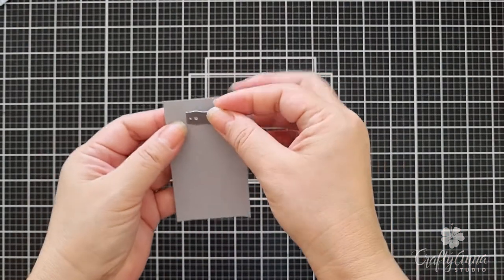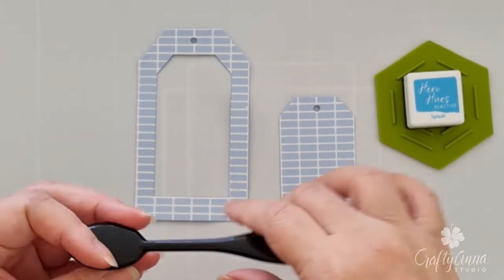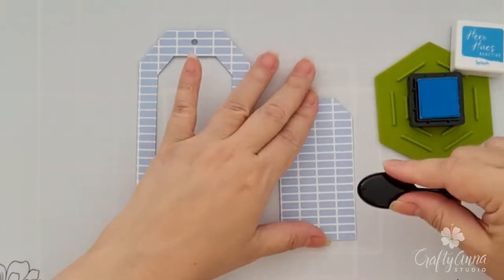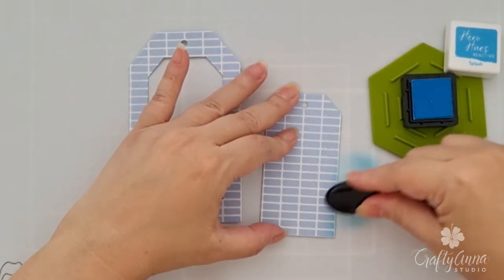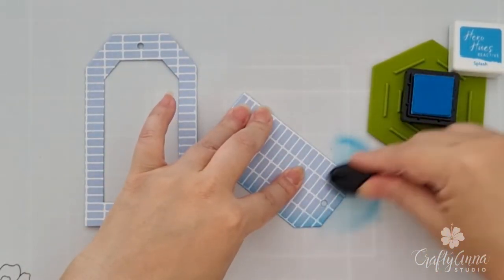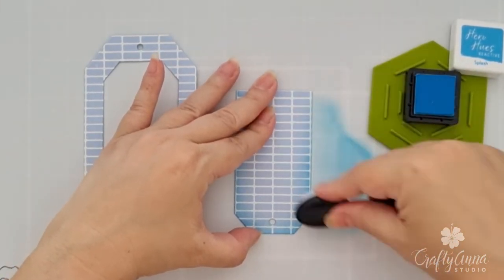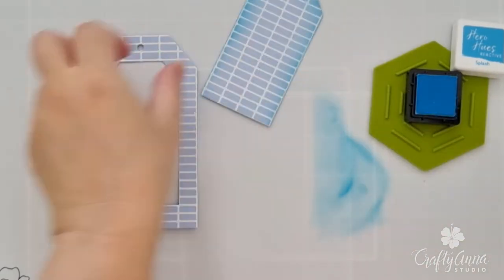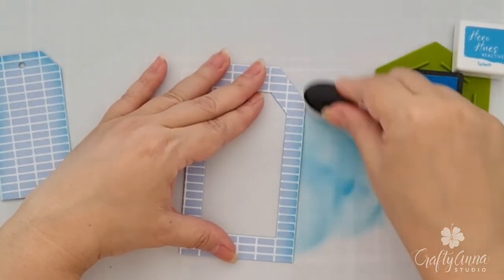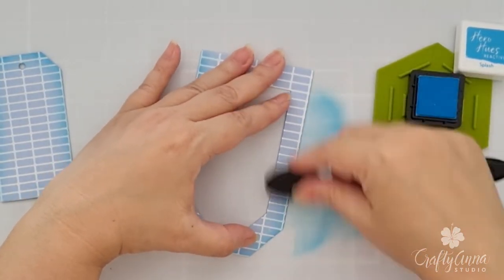I will also use the tag hole topper die and cut out two pieces using the leftover scrap cardstock. Now it's time to ink blend the tags. Here, I'm using the smallest blending brush from Hero Arts. I take splash reactive ink and use it to ink blend. I concentrate the ink blending on the small tag just at the top area. But for the largest tag, I will ink blend all over the sides and also on the inside of the window.